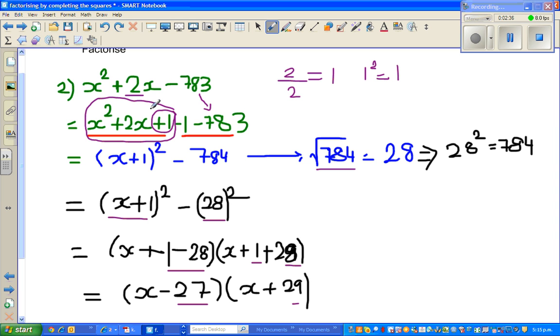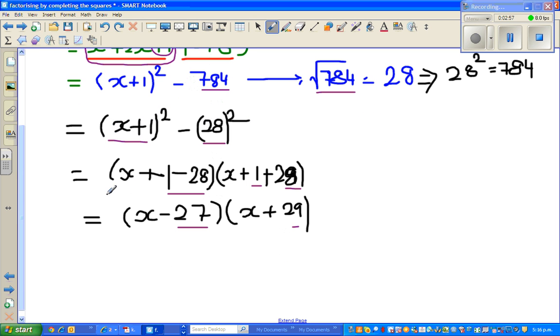So this is what we saw. What we did is you took the half of 2, which is 1, and 1²=1. So this changed to x²+2x+1. You added 1 and then you took away 1, and that gives you a difference of 2 squares. You find this is the perfect square by square rooting 784. So let's continue with one more example today.